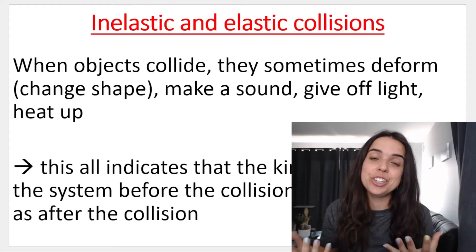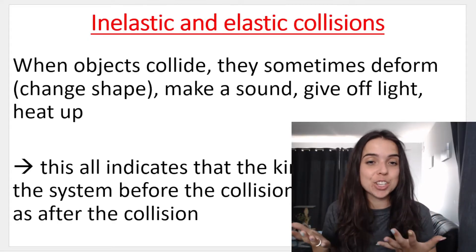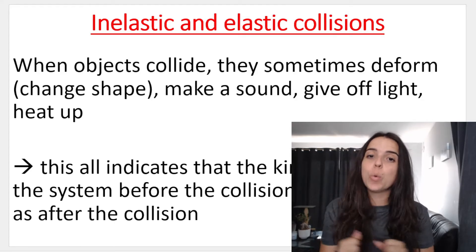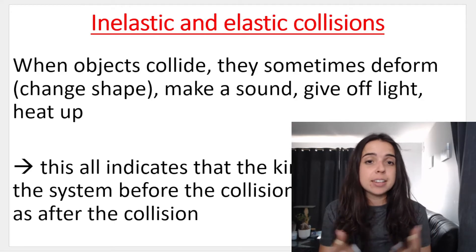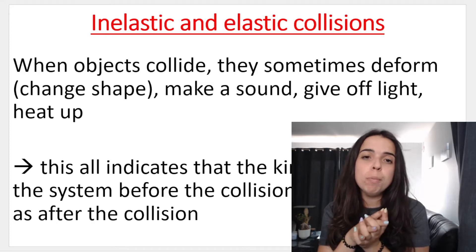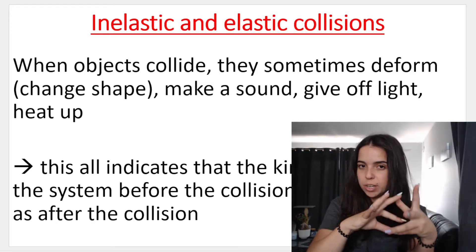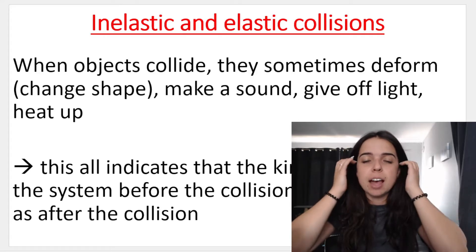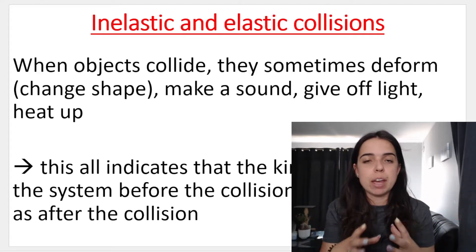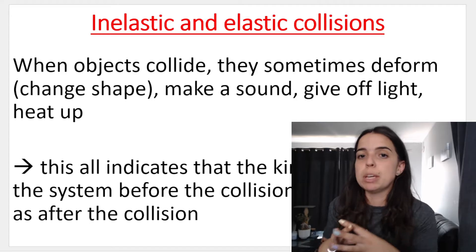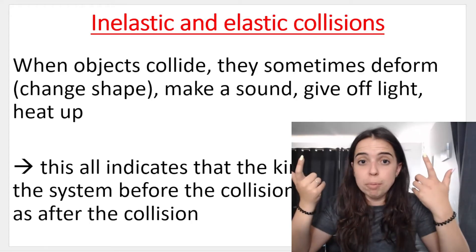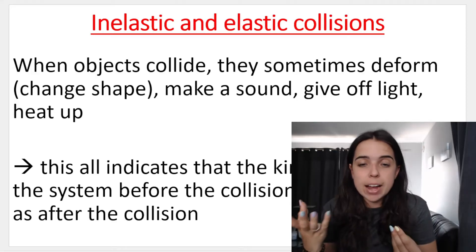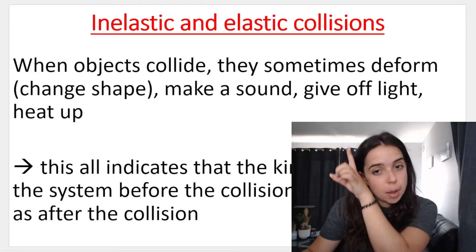Elastic versus inelastic collisions or interactions. The first thing you need to know is that when objects interact — when they collide — they can sometimes deform, which means they change shape. They can twist, make a sound, give off light, heat up. Thinking of a car crash would be a very nice example of this. They can contort, give off sound, light, heat, fire — all of these things.